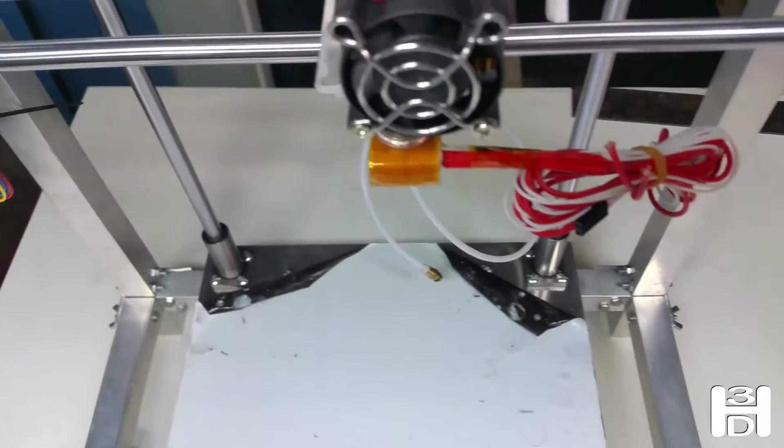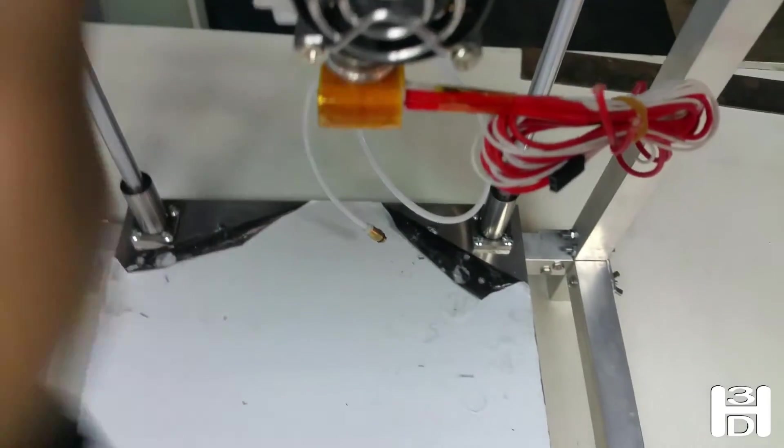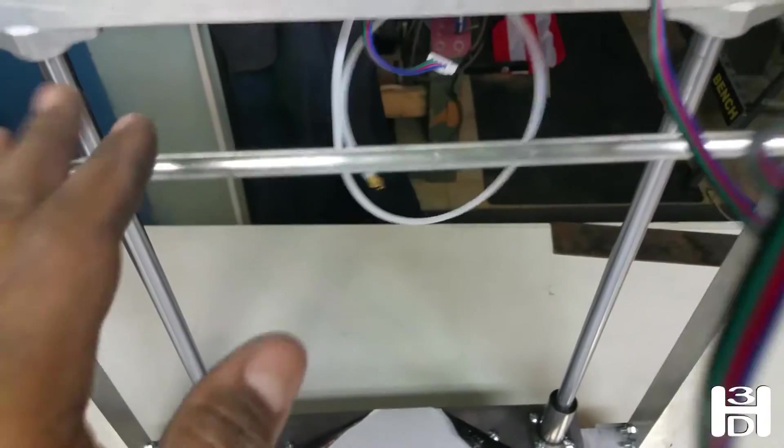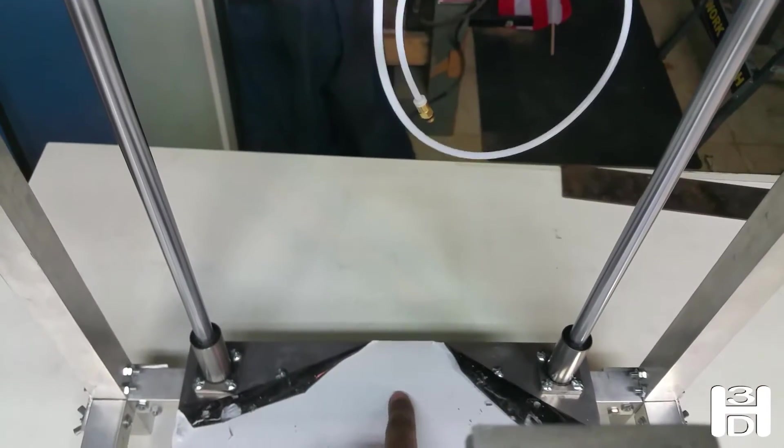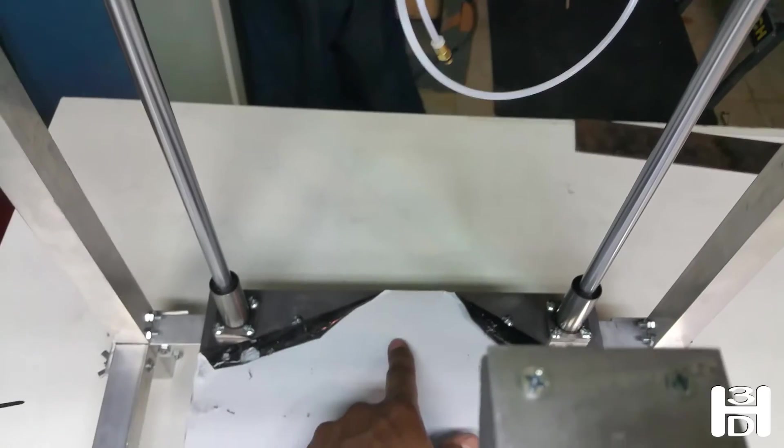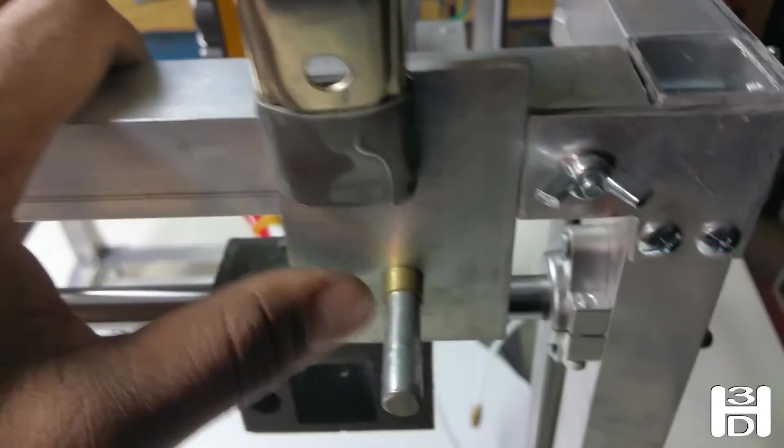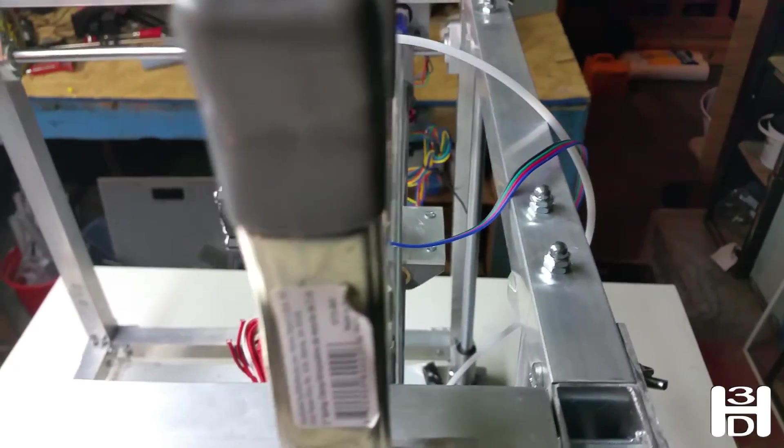Before we finalize the position of this transmission rod right here, we have to put in our z-axis threaded rod and get that position set before we can continue with fastening this in and getting this positioned. We will work on the threaded rod.